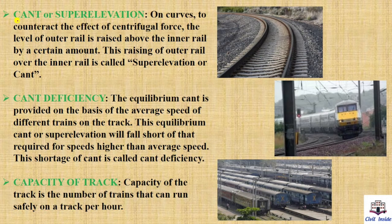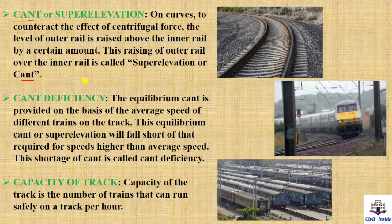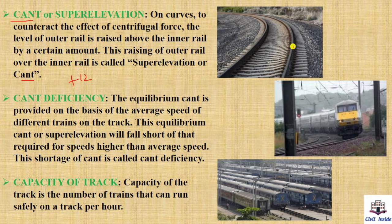Next, cant and super elevation. On curves, to counter the effect of centrifugal force, the level of the outer rail is raised above the inner rail by a certain amount. This raising of the outer rail over the inner rail is called super elevation and cant. We studied this concept as banking of roads in physics and in transport engineering. When the train takes a left turn, the right rail is raised a little higher — that is cant and super elevation.